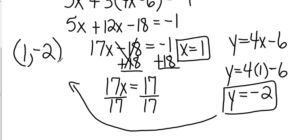So if I graph those two lines, they would intersect at 1 negative 2, and that would be your solution.